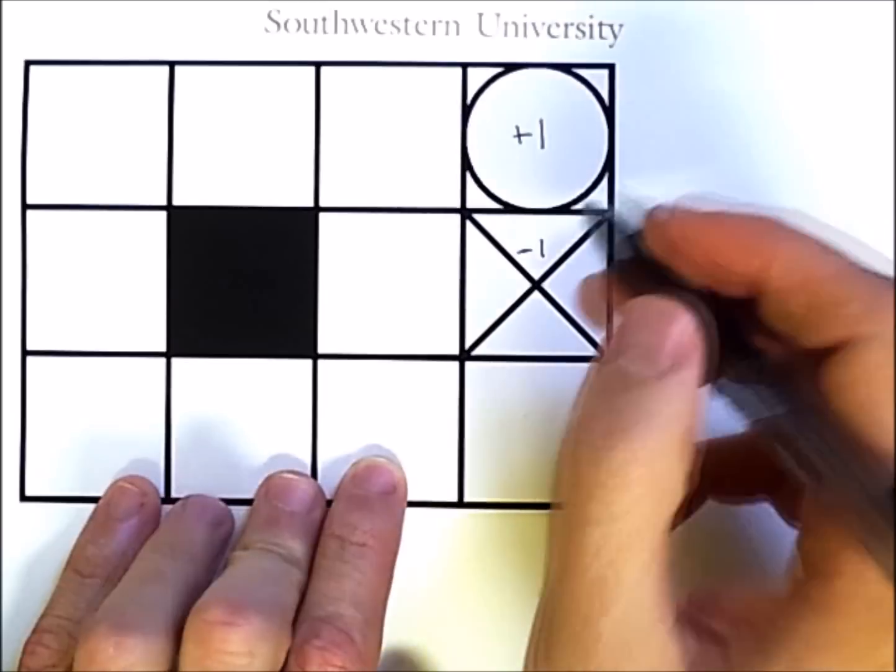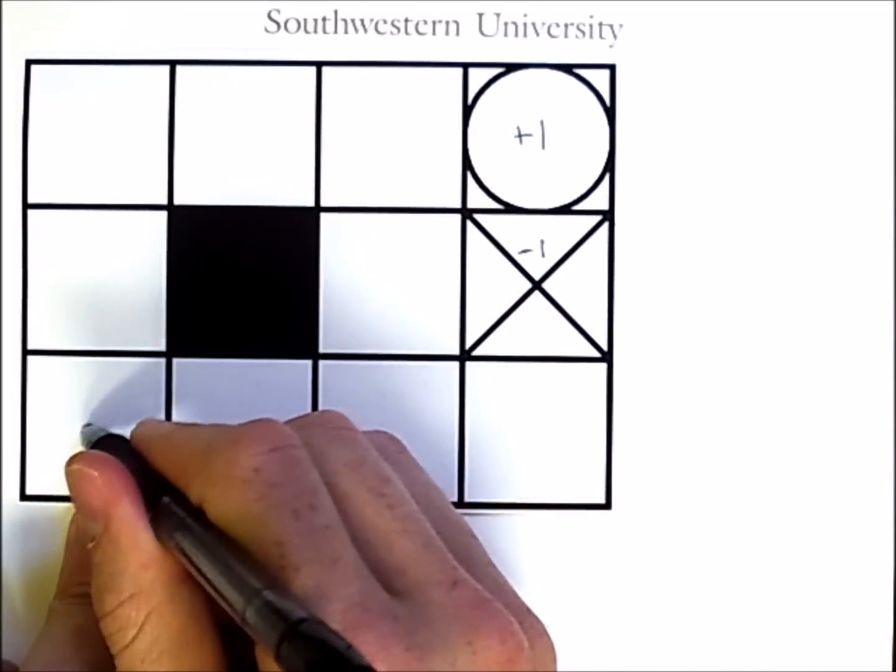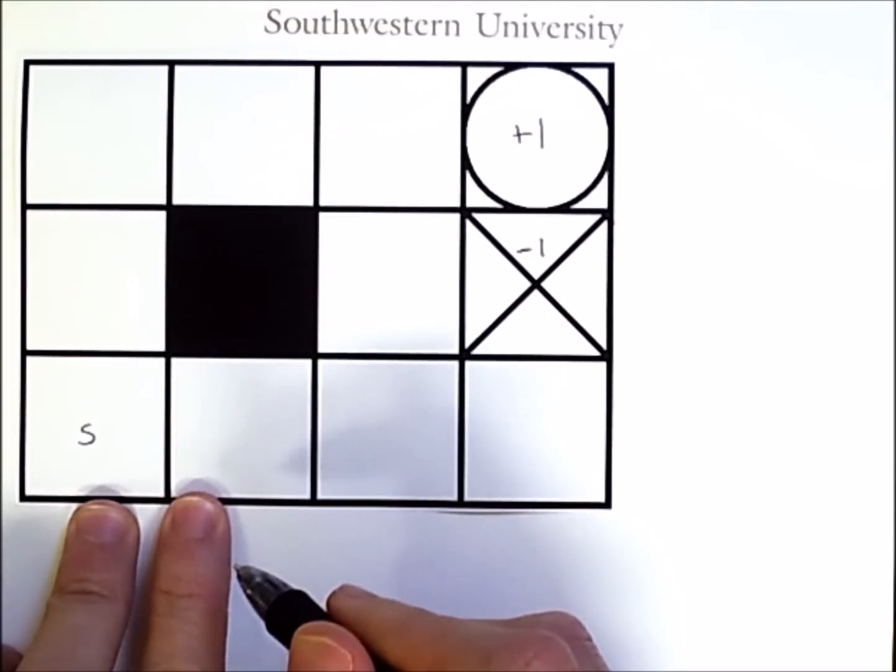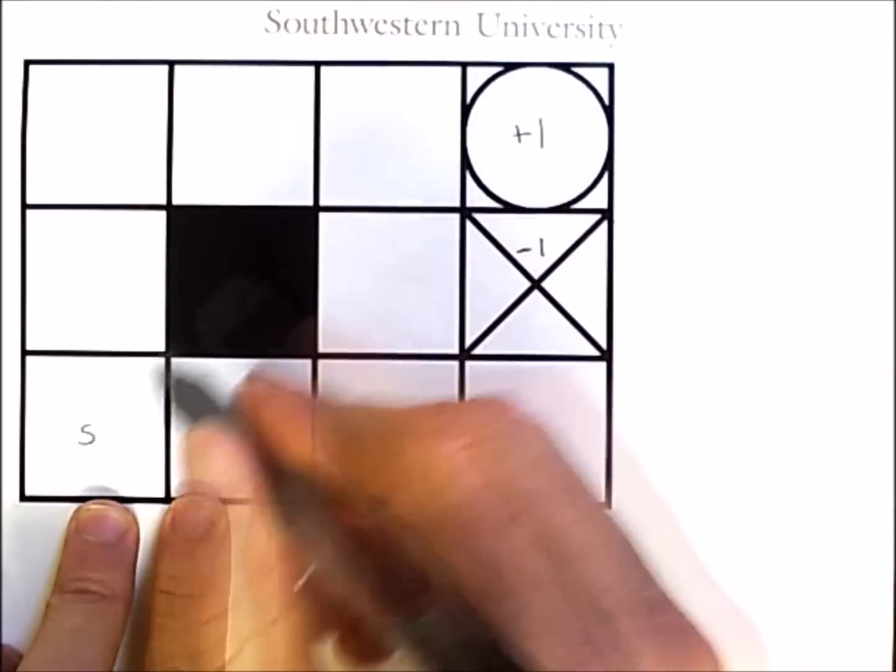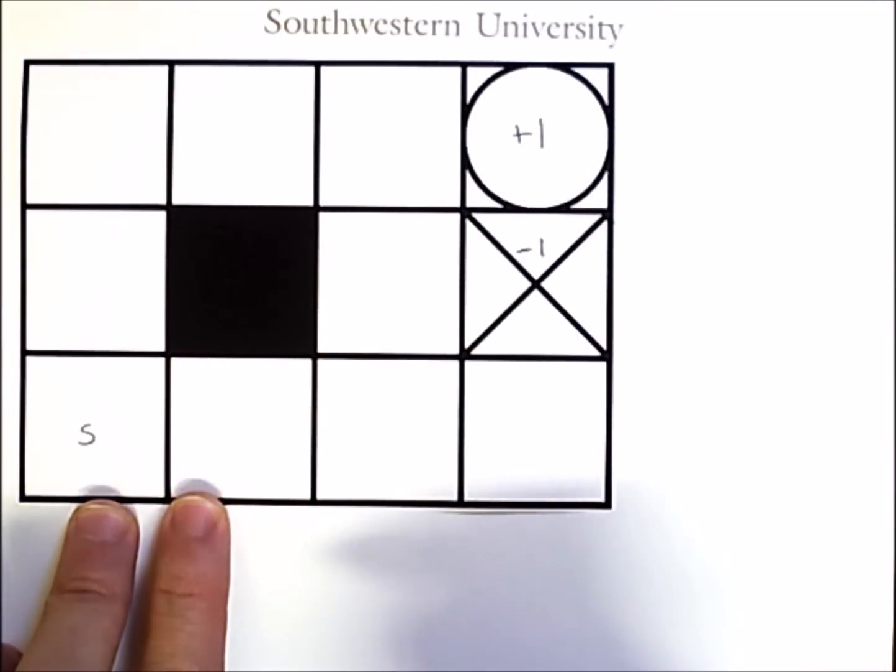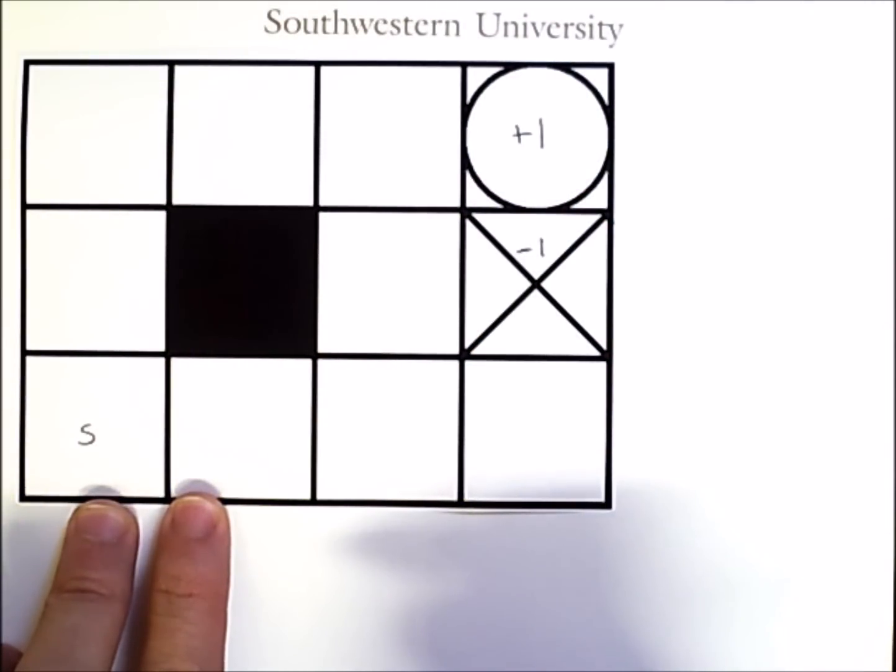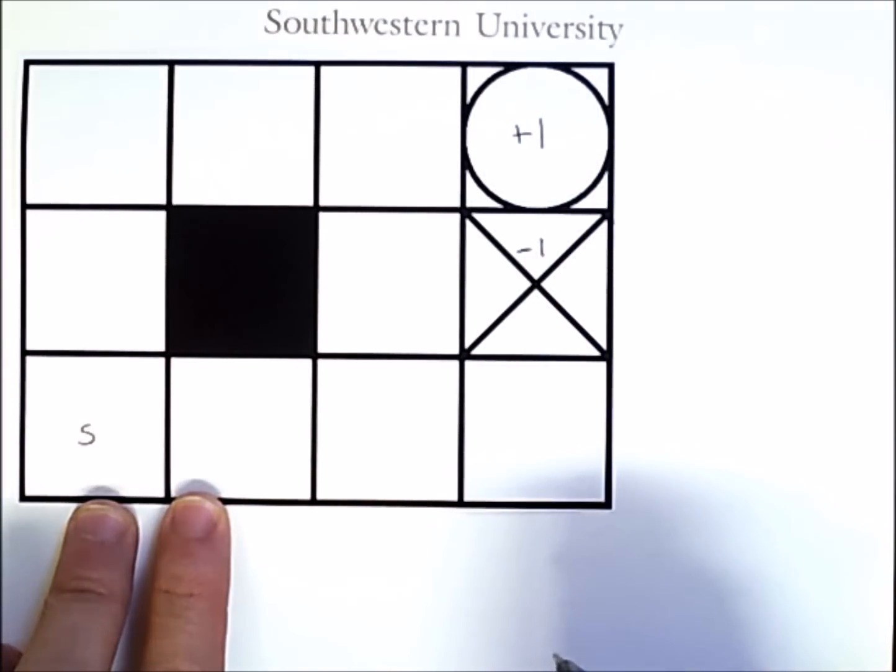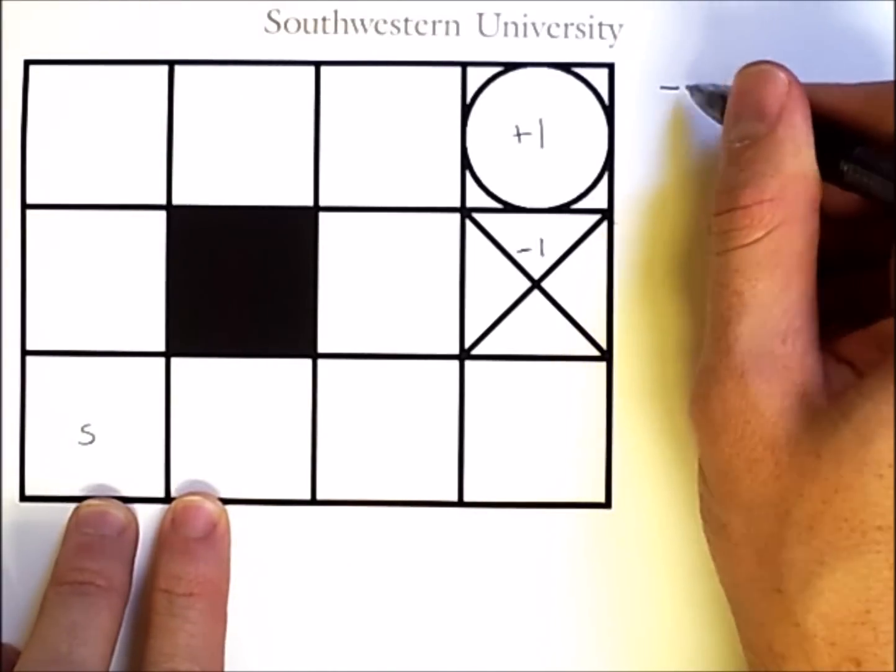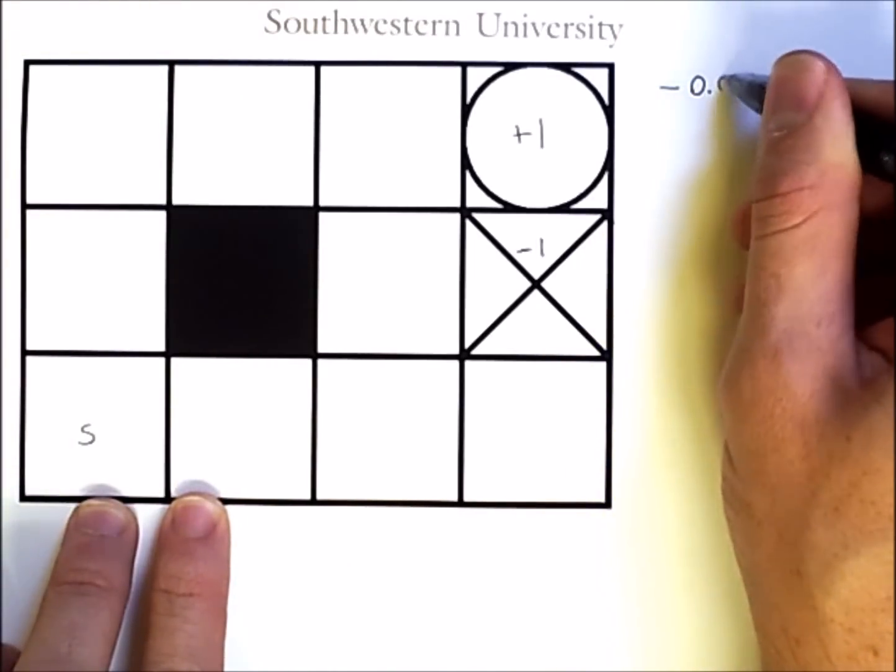Now, the agent will start in this square here, and as we can see, there are two paths to this goal, given that the agent's actions are to move up, down, left, or right. In addition to these final rewards, there is a movement cost of negative 0.04.